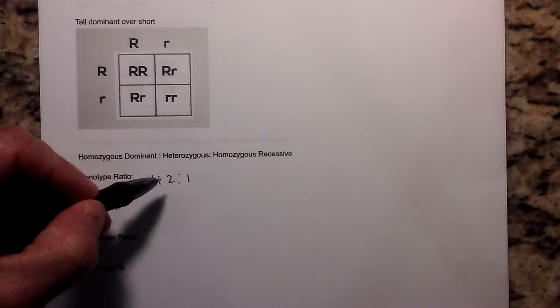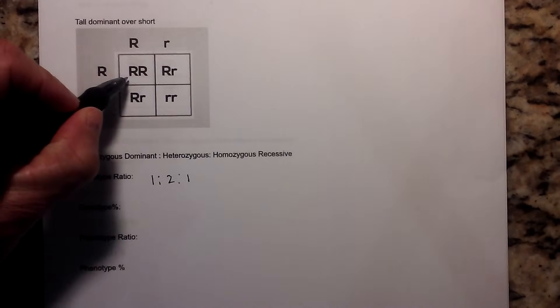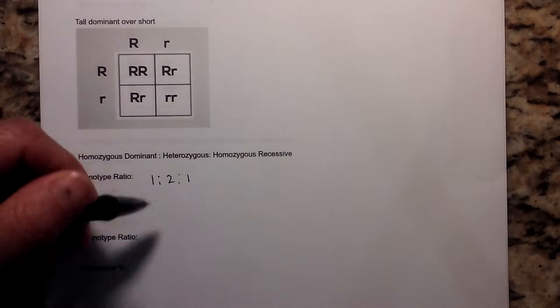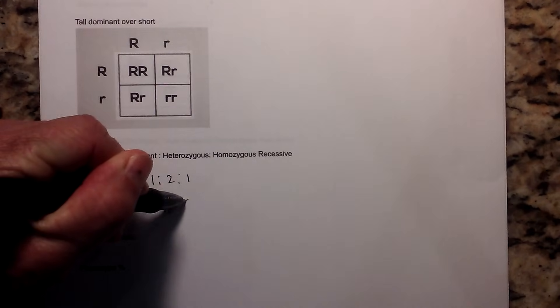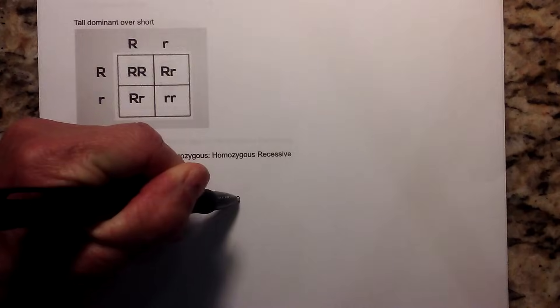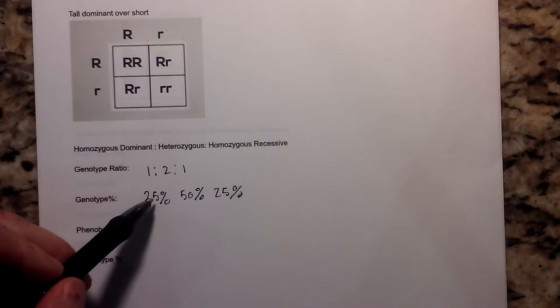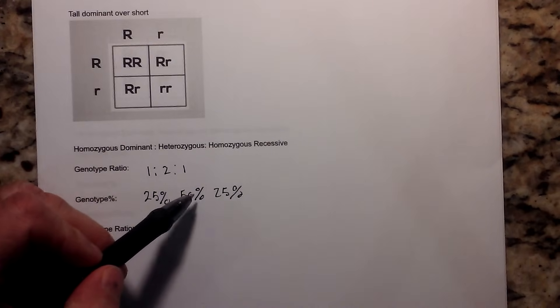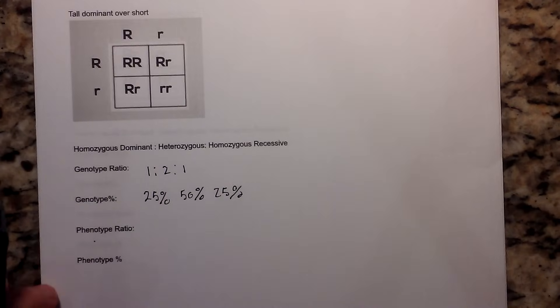And then for your homozygous recessive, we have 1. Now, if we would like for this to be a percent for your genotype percent, remember each box is 25%, so that would be 25%, 50% for heterozygous, and 25% for homozygous recessive.